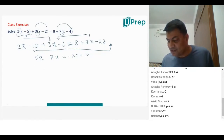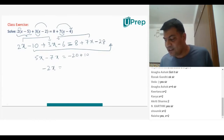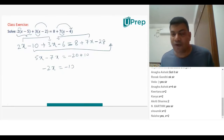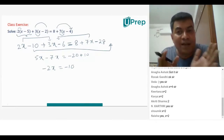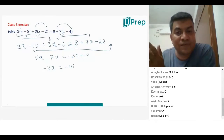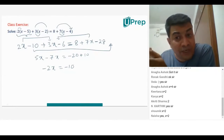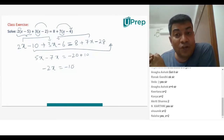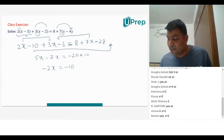We have 5x minus 7x is minus 2x. Minus 2x is equal to minus 20 plus 10. Minus 20 plus 10 will be minus 10. When we have a negative number and a positive number, we find the difference of the numbers and put whichever is the majority sign. So you have minus 20 plus 10, so minus 10.